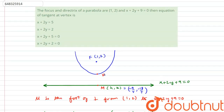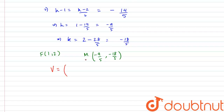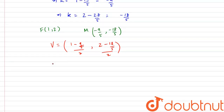These are the coordinates of M. Now, the vertex V of the parabola is the midpoint of F and M. We have F = (1, 2) and M = (−9/5, −18/5). The midpoint is: x = (1 + (−9/5))/2 and y = (2 + (−18/5))/2.